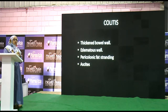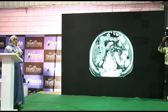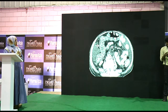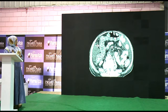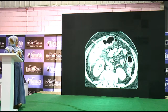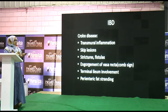Colitis frequently presents as acute abdomen. It can be infectious, neutropenic, ischemic, or pseudomembranous. CT is the first-line modality in the ER. In one case, the patient presented with acute abdominal pain, diarrhea, and vomiting; CT showed thickened edematous left-sided colon with ascites and pericolonic fat stranding. In another case of infectious colitis, edema in the walls, enhancing mucosa and serosa with pericolonic fat stranding and ascites were seen. Differentiate from carcinoma, where additional lymph nodes are seen and the involved segment is shorter.